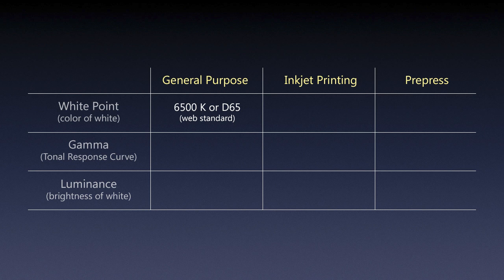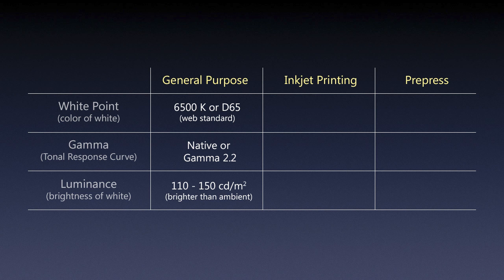For general purpose, my recommendation for white point — and it's a recommendation shared by many calibration devices — is to set it to 6500K, or D65 if you have that option. D65 is also considered the web standard because the sRGB profile for images is also D65. As far as the tone response curve, I believe you should go with the native gamma if it's very close to 2.2, otherwise calibrate to gamma 2.2.